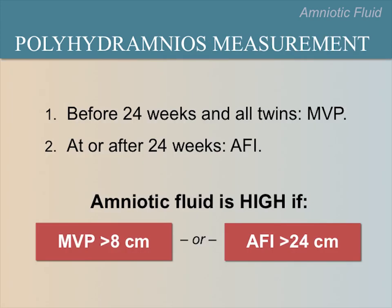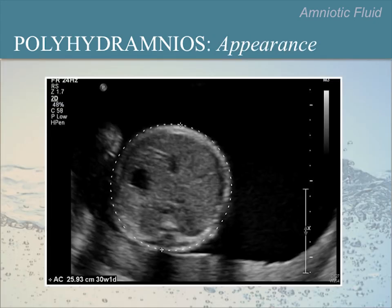This is a transverse view of the fetal abdomen with excess amniotic fluid. Where do you see the excess fluid? Please pause the video now to encourage responses from within the group. Here you can see the umbilical cord inserting into the fetal abdomen. Notice again the excess fluid in this image and how the fetus appears to be floating.